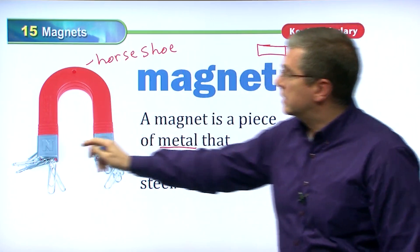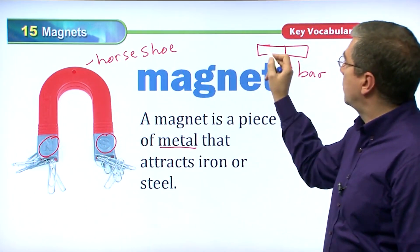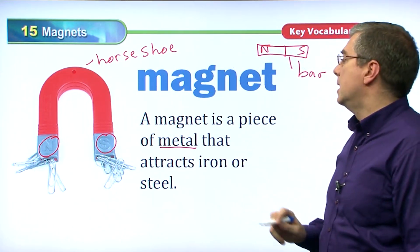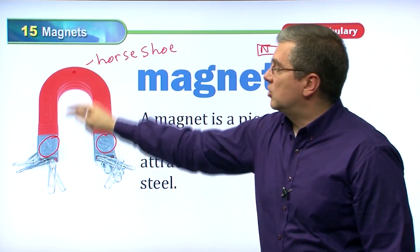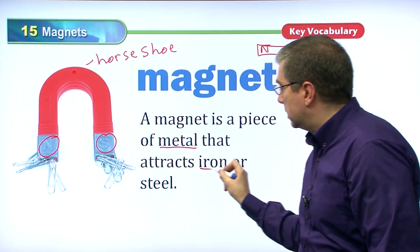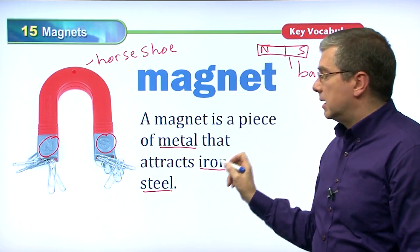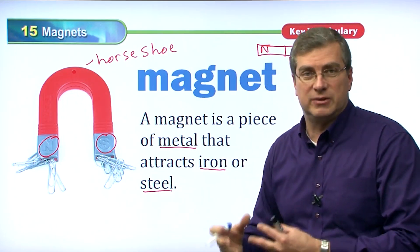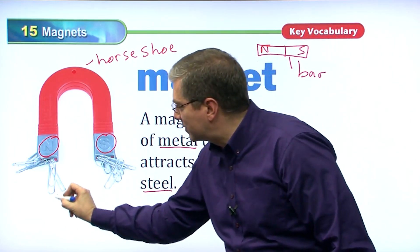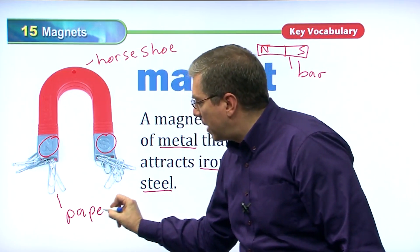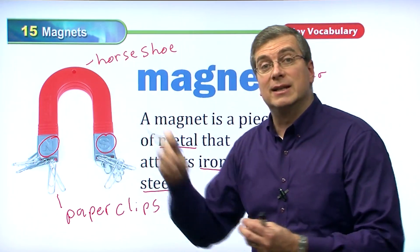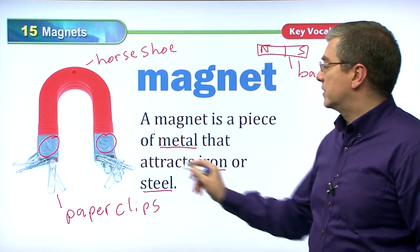Magnets have horseshoe shapes and bar shapes. On a bar magnet, one part is north and the other is south — we'll talk about that later. A magnet attracts iron or steel. Steel is something human beings make from iron. You can see all these paper clips — paper clips are made of steel, they have iron in them, and they are attracted to the magnets.